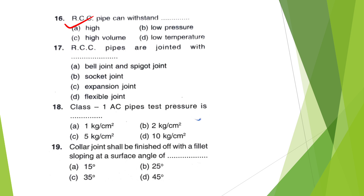RCC pipes are joined with — Bell joint and Spigot joint, Socket joint, Expansion joint, or Flexible joint? The answer is option A — Bell joint and Spigot joint.